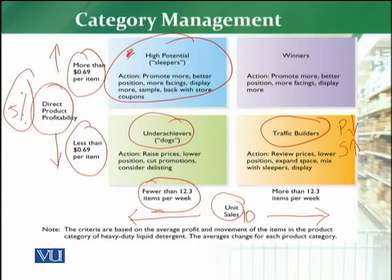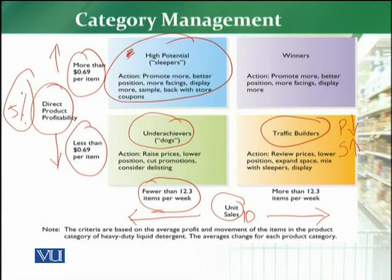For traffic builder categories, the retailer should review prices, lower their position, and expand their shelf space, because customers are looking for more and more of these products. If space is limited, shelves will be empty, and that will cause customer disappointment and disturb customer loyalty. Normally the retailer mixes high potential categories with traffic builder categories and tries to cross-sell them, so that sales increase from traffic builder categories and margin increases from high potential categories. The key action for traffic builders is to improve display, because customers are actively looking for these products in the retail store.